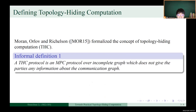Moran, Adlaou, and Dricholson formalized the concept of topology-hiding computation. Informally speaking, a THC protocol is an MPC protocol over an incomplete graph, which does not give the parties any information about the graph topology.